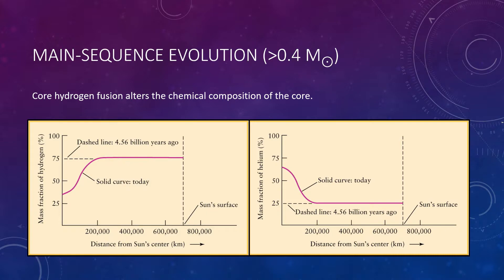Let's look at what happens for a star with a mass greater than 0.4 solar masses. A star undergoes noticeable changes in luminosity, surface temperature, and radius during its main sequence lifetime. These changes are a result of core hydrogen fusion, which alters the chemical composition of the core. As an example, when our Sun first formed, its composition was the same at all points throughout its volume — by mass, about 74% hydrogen, 25% helium, and 1% heavier elements. But the Sun's core now contains a greater mass of helium than hydrogen.